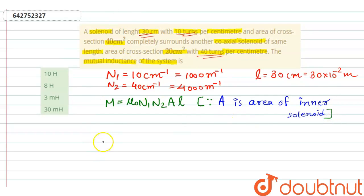Okay, so M will be equal to 4π×10⁻⁷, and N₁ is 1000, and N₂ is 4000. So area of cross-section - area is inner solenoid, so